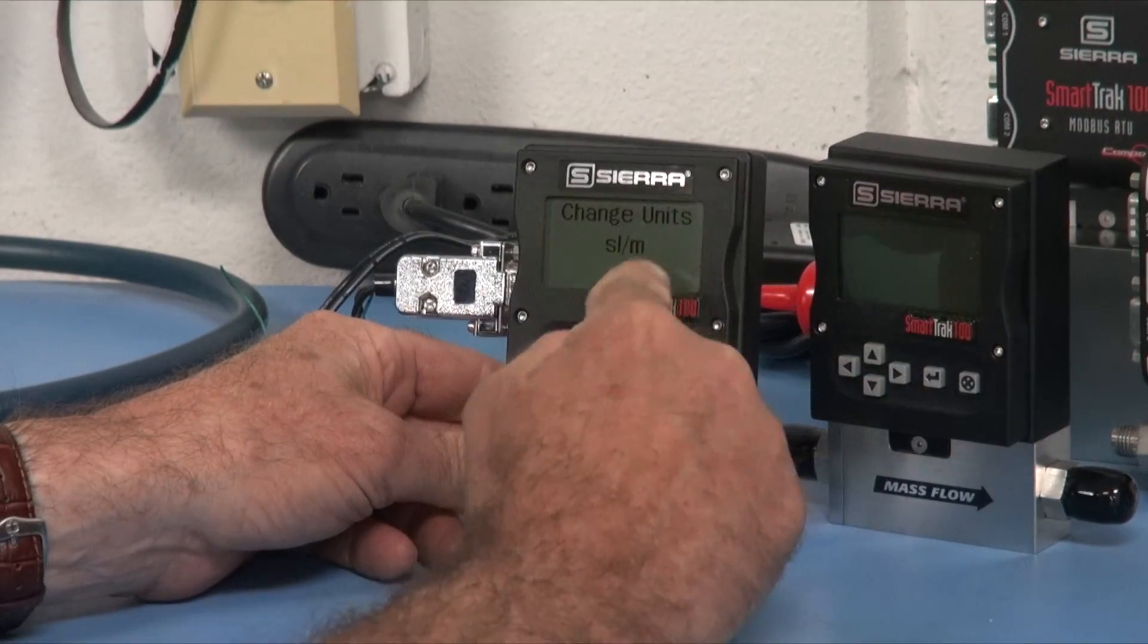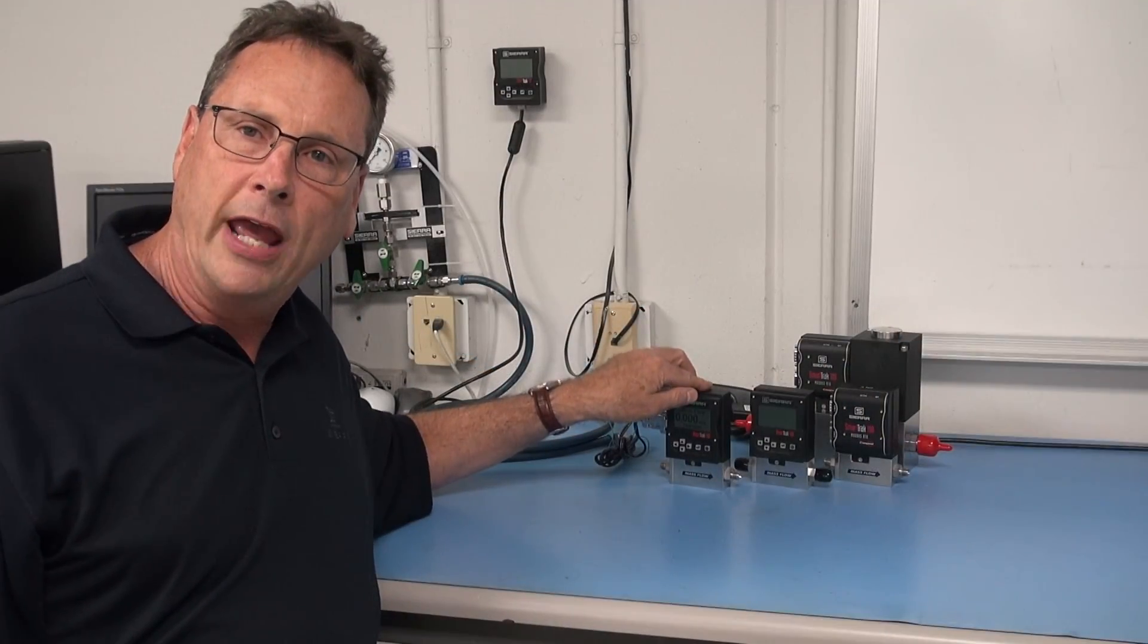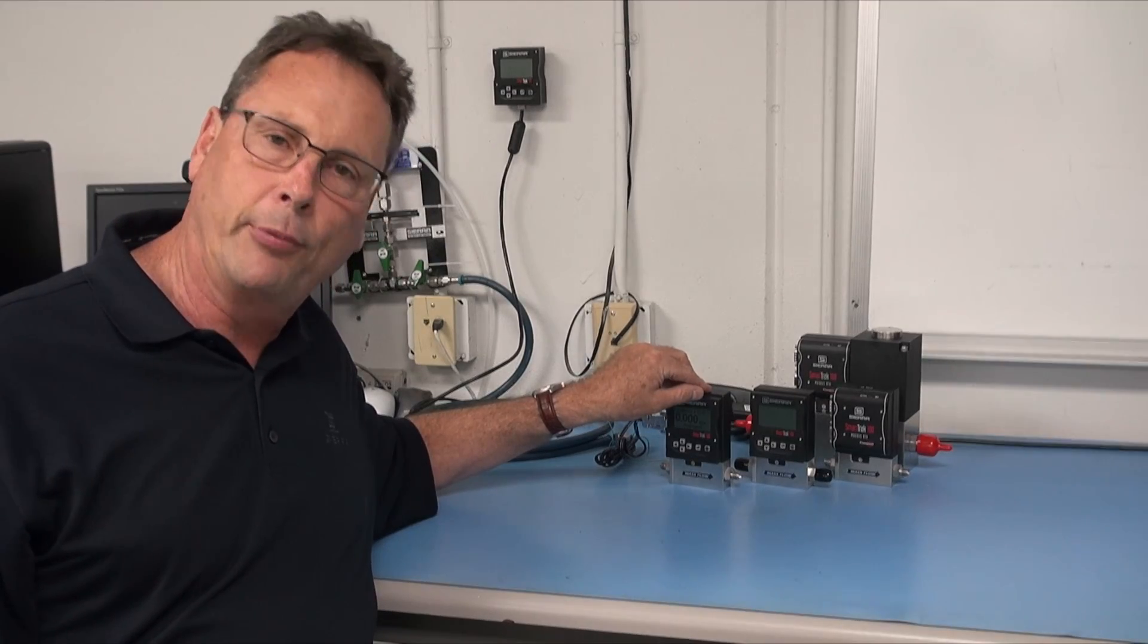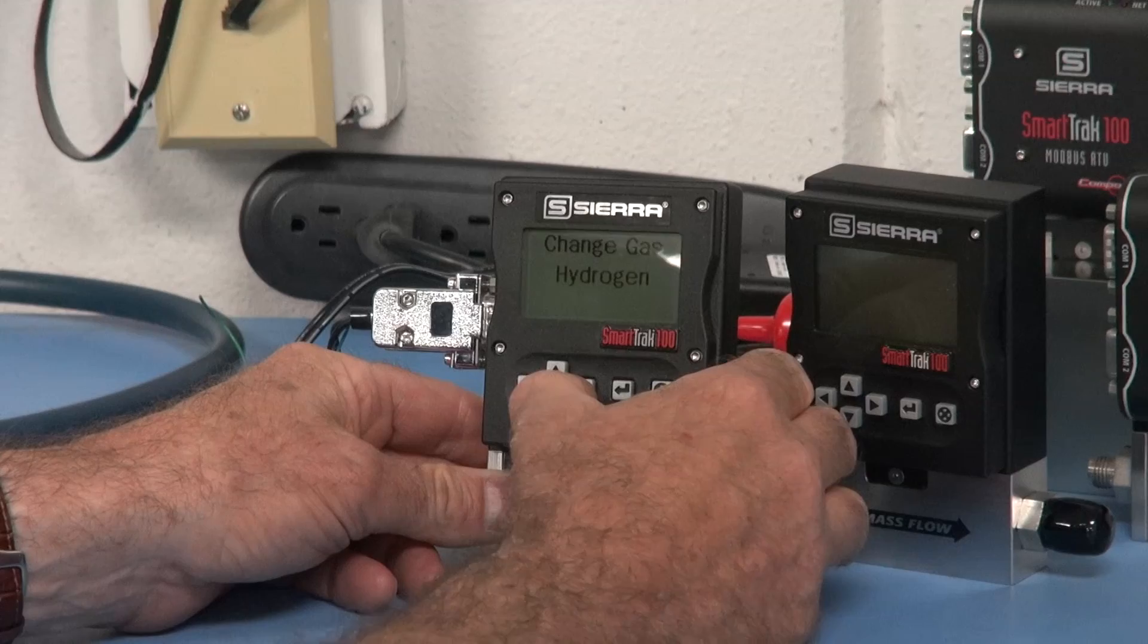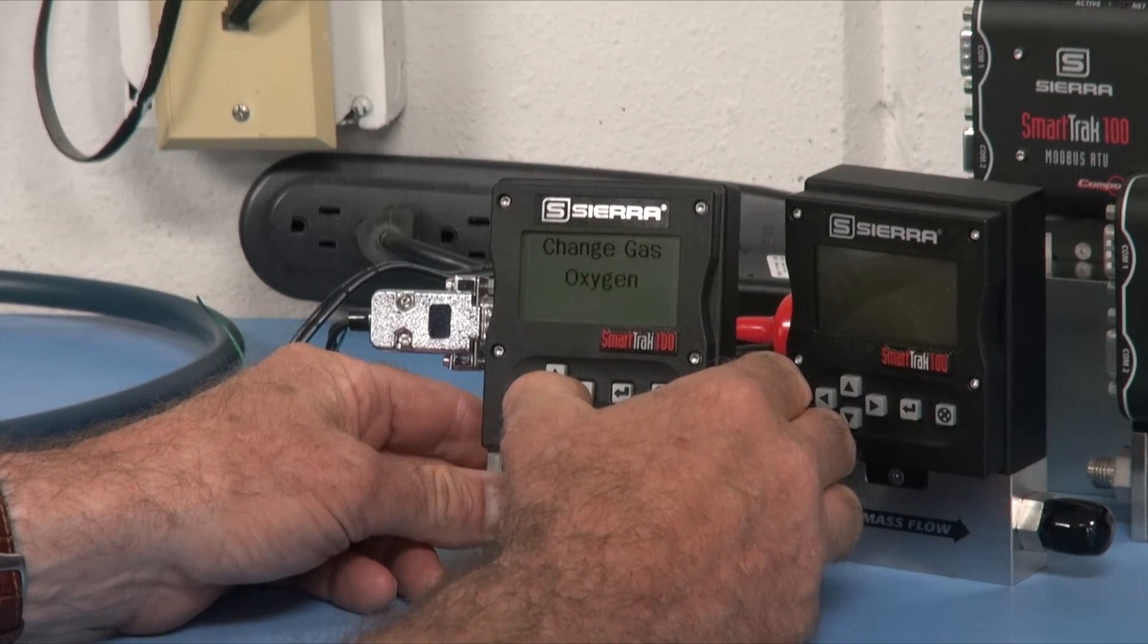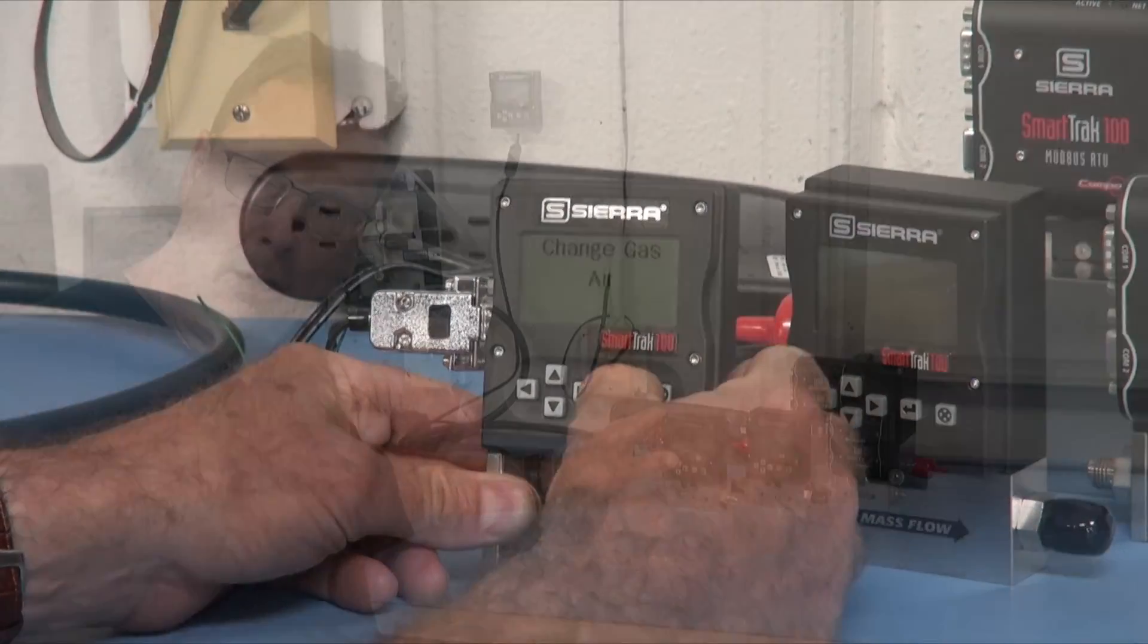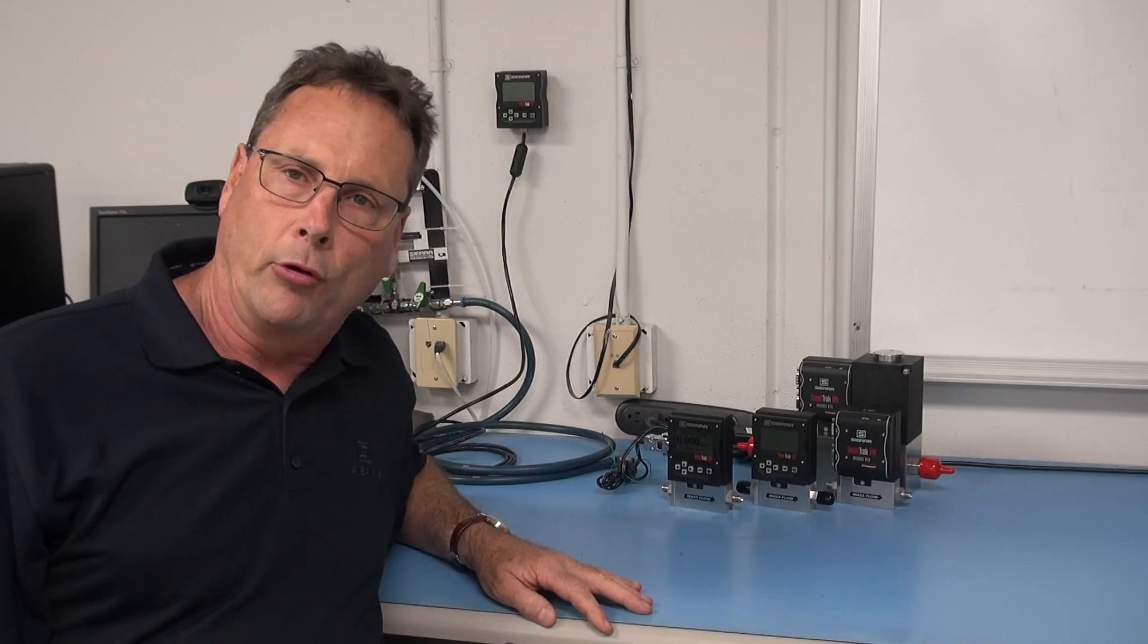We can change the units, so this would have to be set up in standard liters a minute, but the SmartTrack 100 has 10 gases that can be pre-programmed. It says hydrogen, but if I press enter I can scroll and choose methane, nitrogen, nitrous oxide, oxygen, air, etc. Or you can tell us your special mixture and we can pre-program that.